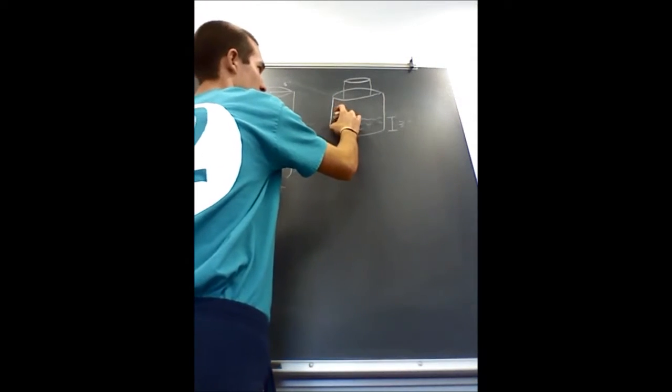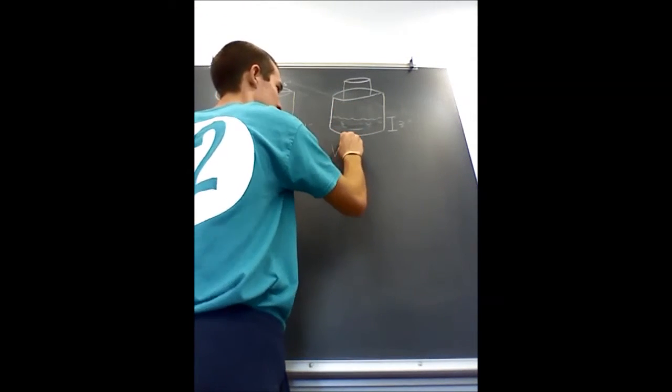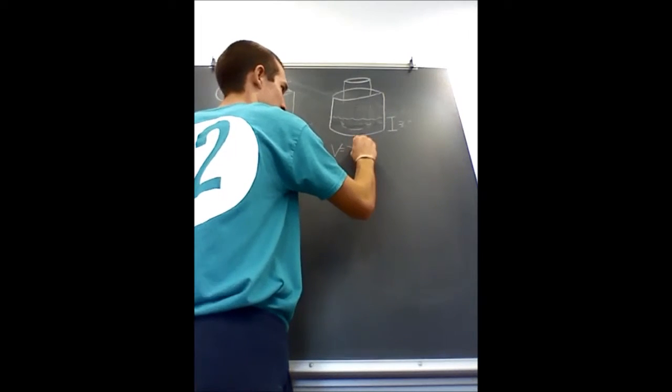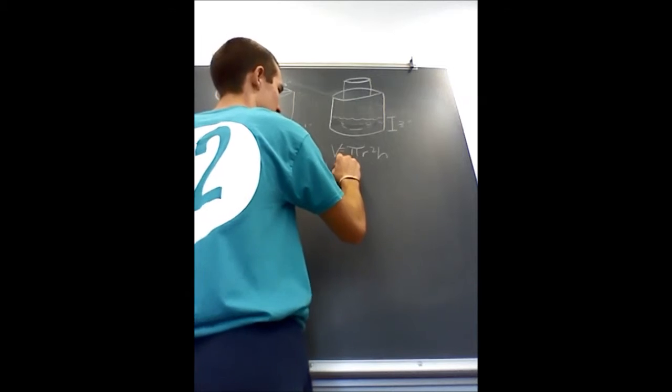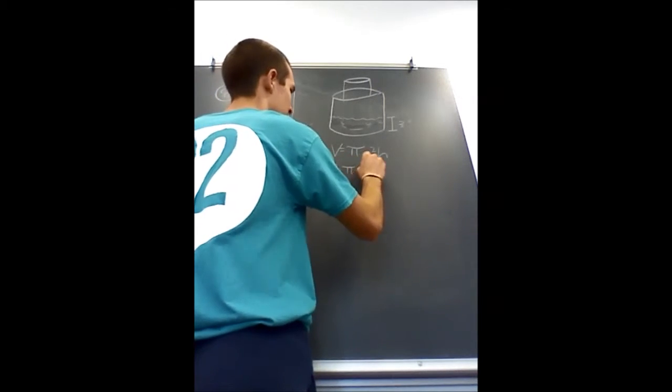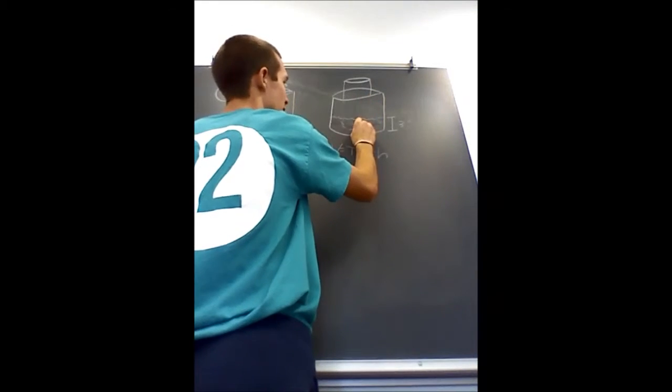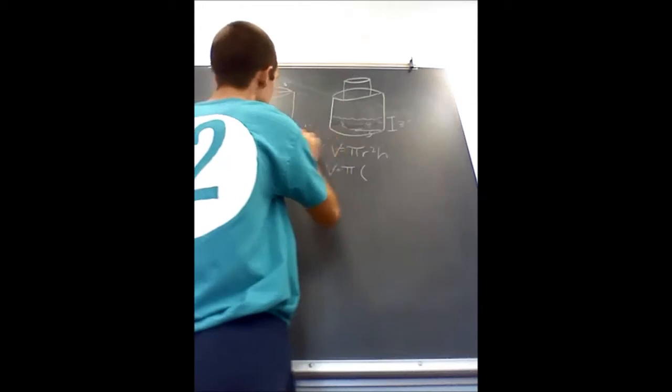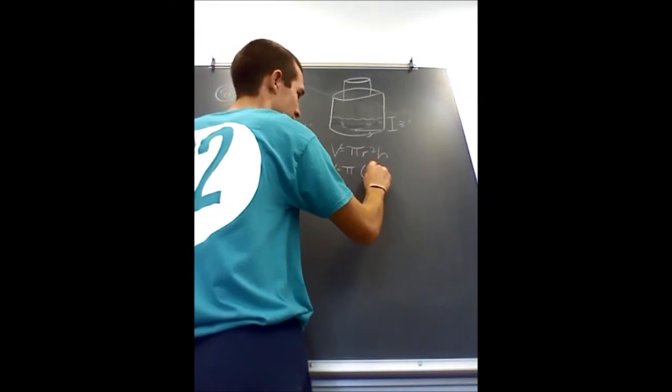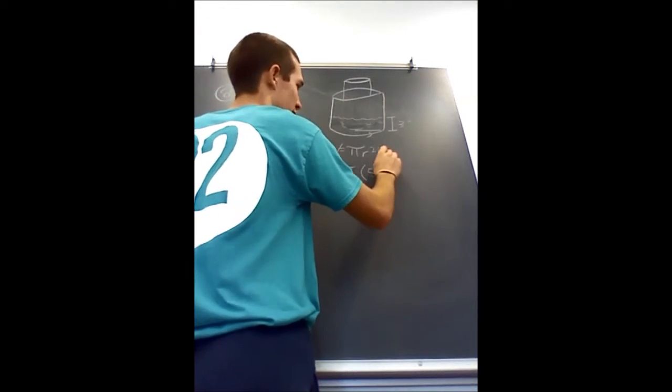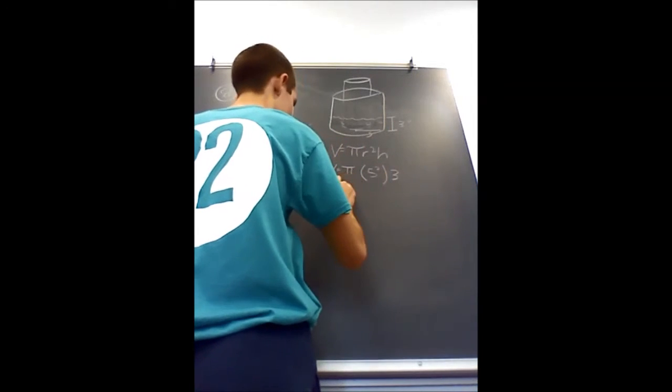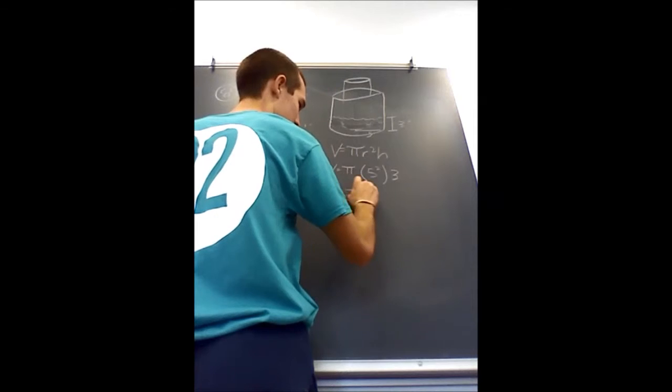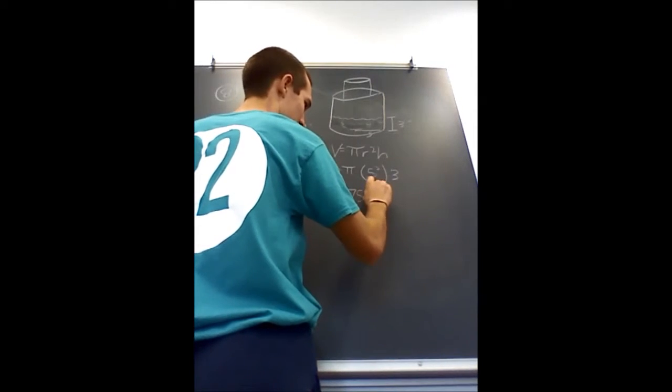So we can now find the volume of this water using the same formula. And you get pi times the radius, which is still 5 from the larger pot, squared, times by the new height of the water which is 3. And the volume of that water turns out to be 75 pi.